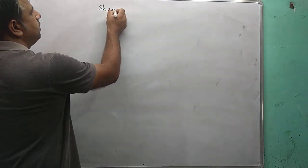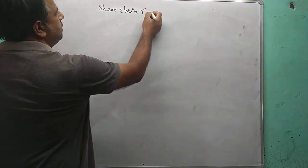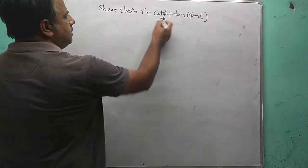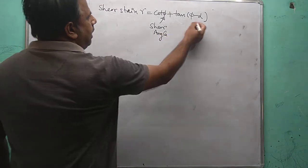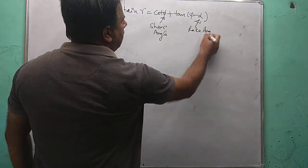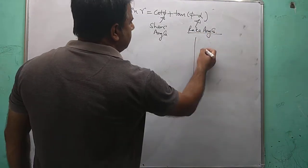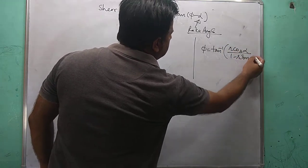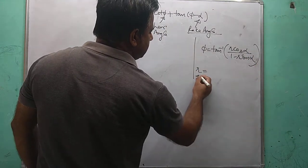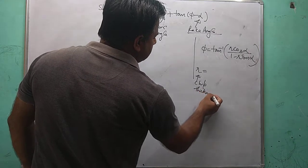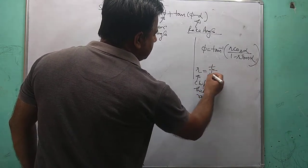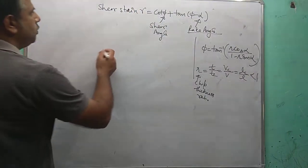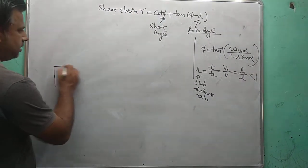In orthogonal cutting operations, we will try to prove that shear strain gamma is equal to cot phi plus tan(phi minus alpha), where phi is the shear angle and alpha is the rake angle. Phi can be calculated using the formula: tan inverse of (r cos alpha) over (1 minus r sin alpha), where r is the chip thickness ratio, equal to t over tc, which is always less than 1.